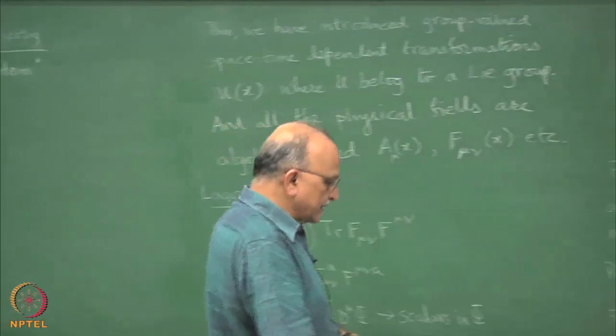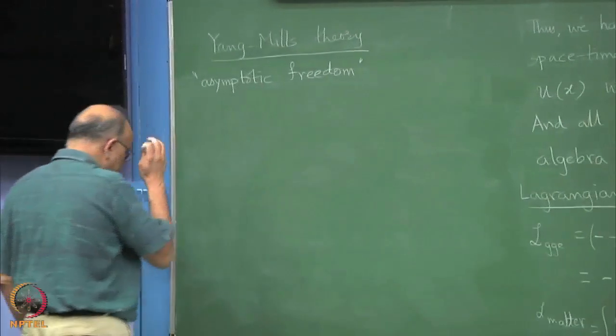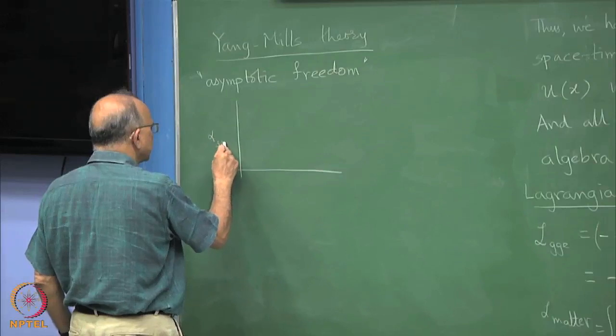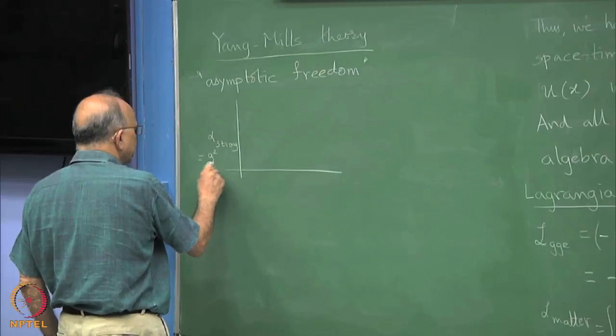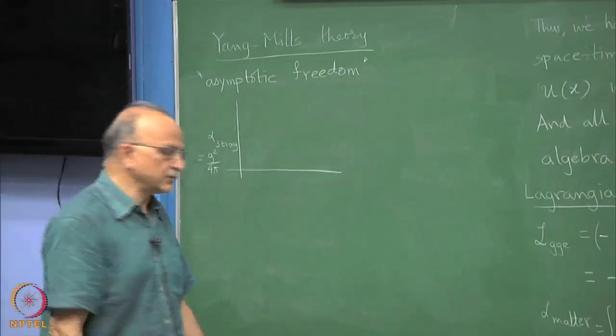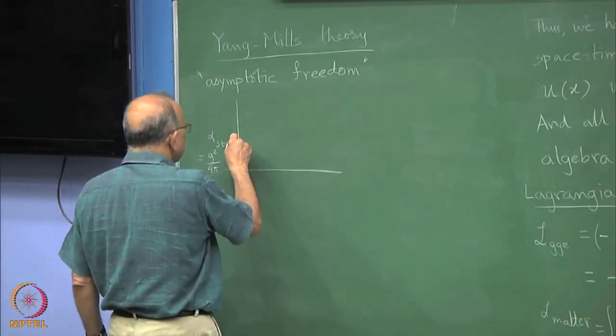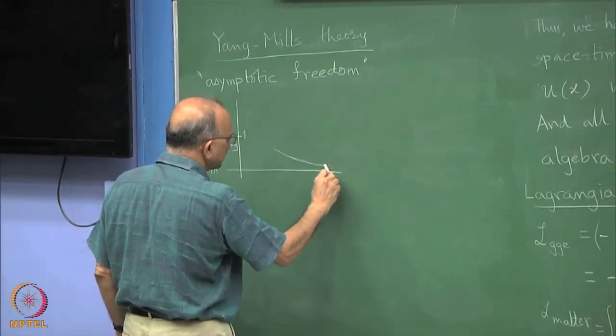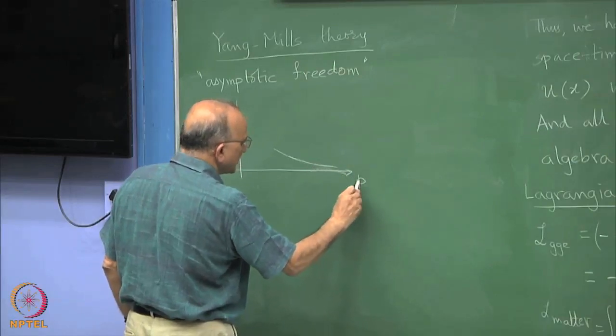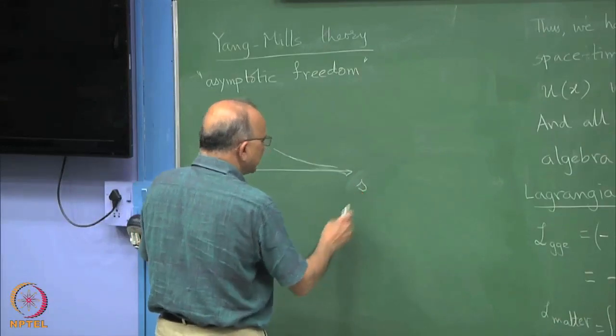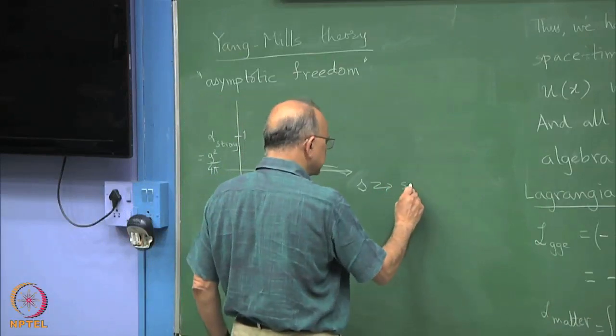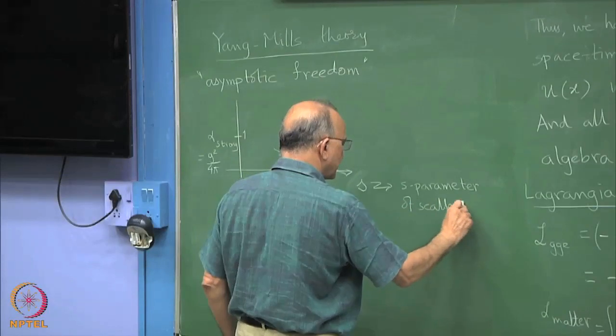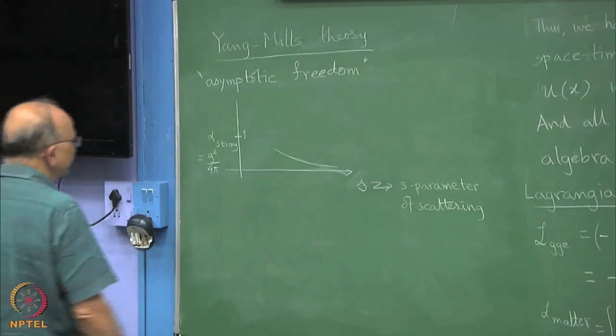But there is another clever thing that was discovered by t'Hooft. We draw this by saying that alpha strong, which is equal to g square over 4 pi for SU3, it runs like this. Put 1 over here and it is something small and of course going to 0 in the limit. S is the s parameter of scattering. As a function of s, it goes to 0.